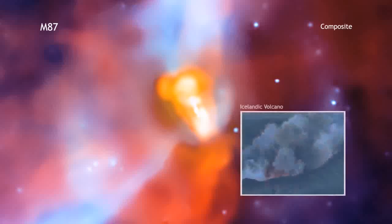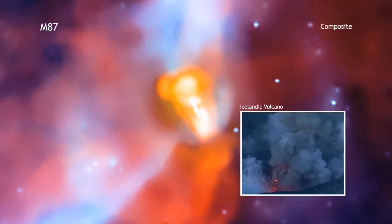The comparison between the black hole in M87 and the volcano in Iceland shows that even though astronomical phenomena occur in exotic settings and over huge scales, the physics can be very similar to events on Earth.